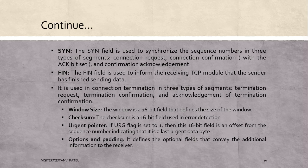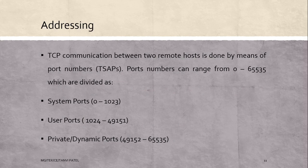Other fields in the segment format: window size is a 16-bit field that defines the size of the window. Checksum is a 16-bit field used in error detection. Urgent pointer: if the URG field is set to 1, this 16-bit field is an offset from the sequence number indicating the last urgent data byte. Options and padding defines the optional field that conveys additional information to the receiver.